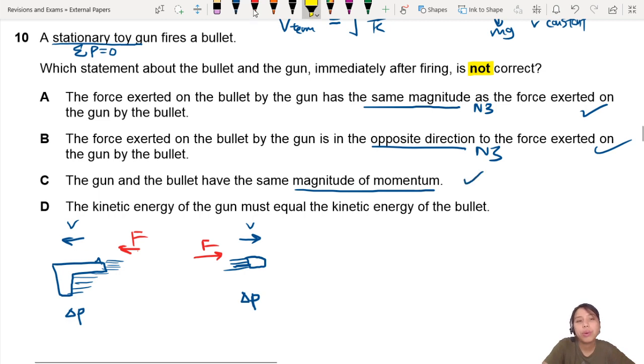Because initial momentum is zero. And after that, one moves to the left with a certain momentum. One moves to the right with a certain momentum. That's correct. Okay.